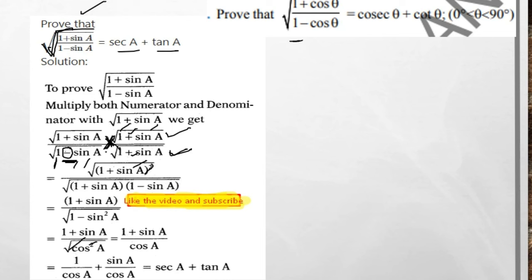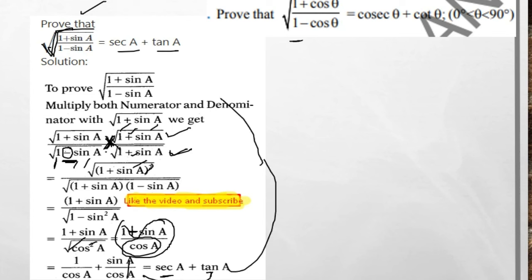Separate (1 + sin θ)/cos θ as 1/cos θ + sin θ/cos θ. Here, 1/cos θ = sec θ and sin θ/cos θ = tan θ. So LHS = sec θ + tan θ, which is the RHS. Hence proved.